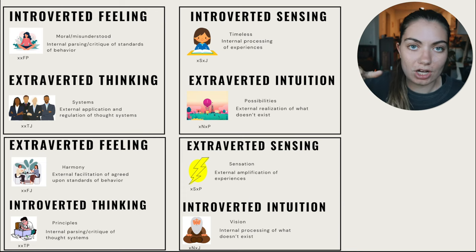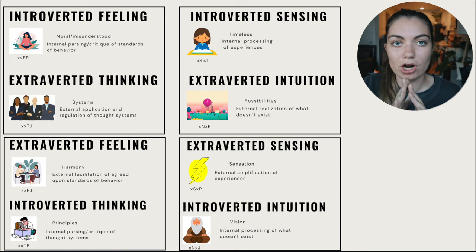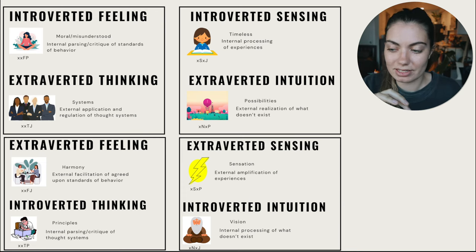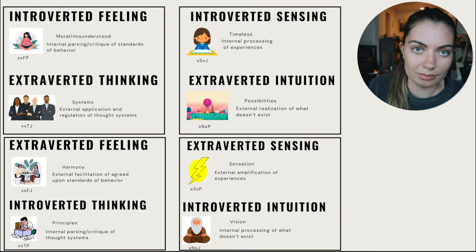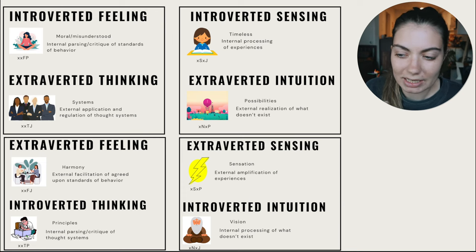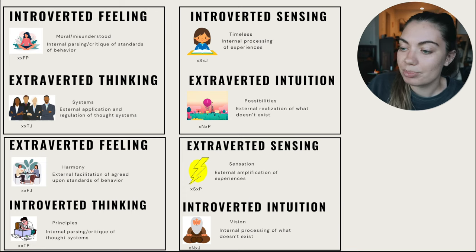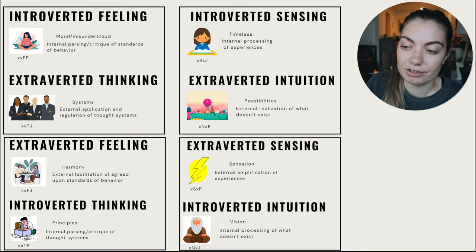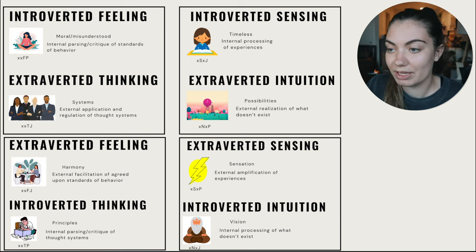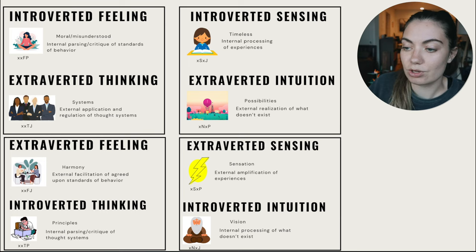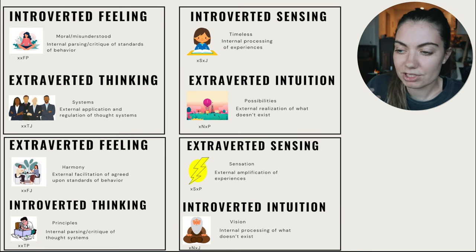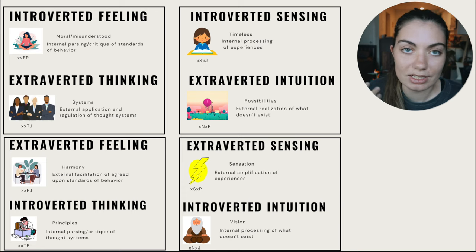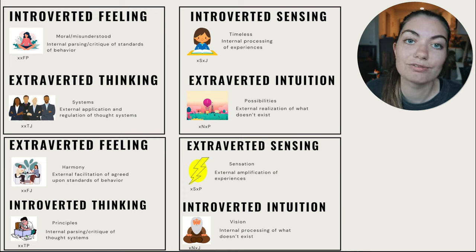In the top left box, introverted feeling and extroverted thinking are direct opposites and make a kind of yin-yang pair. You either have the top-left pair or the bottom-left pair, and one will probably feel most strongly like you. I don't recommend typing yourself this way though — the tests are frequently wrong. I recommend studying the cognitive functions instead. I have 45-minute deep dives on all of these functions linked in the description.